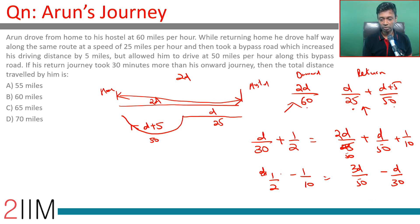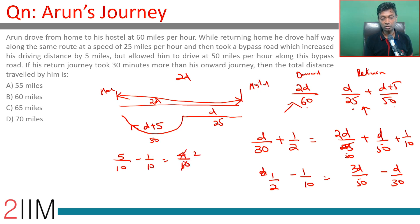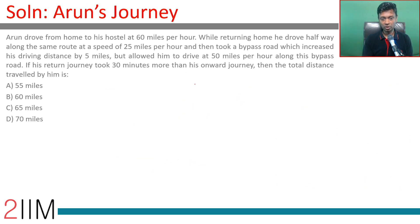So 1/2 minus 1/10 equals 3D/50 minus D/30. Now, 1/2 minus 1/10 is 5/10 minus 1/10, which equals 4/10, which simplifies to 2/5. So the left side is 2/5. On the right side, the LCM of 50 and 30 is 150, so I am going to write this on the next page.